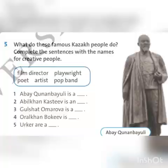And your home task, exercise number 5: what do these famous Kazakh people do? Complete the sentences with the names for creative people. Who is Abay? All of these exercises are on page 96. Good luck, children!